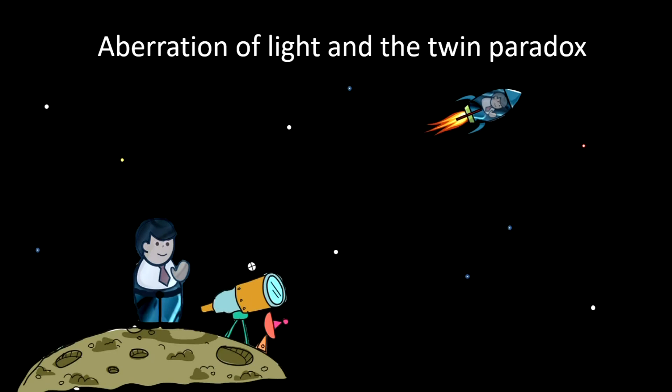The twin paradox has been explained in many different ways from relativity's perspective. This is the case where one twin stays on the home planet while the other takes a trip to a nearby star at a relativistic speed. Since the twins are moving with respect to each other, which one is aging faster? Which one will be younger when they come back together? Most explanations involve acceleration effects.